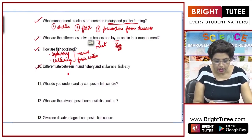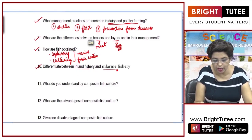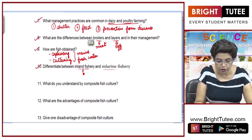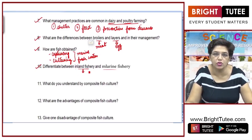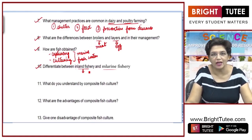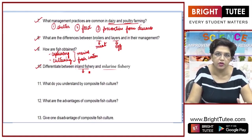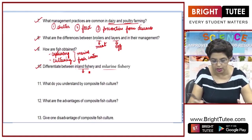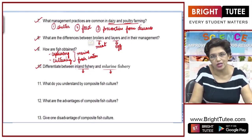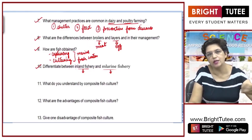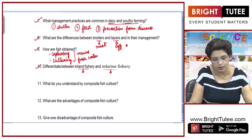Next question: differentiate between inland fishery and marine fishery. Inland fishery is done in freshwater resources like brackish water, ponds, rivers, and lagoons. Marine fishery is done in coastal areas and in the deep sea beyond.